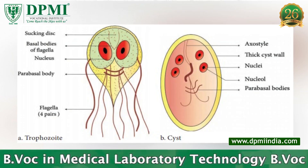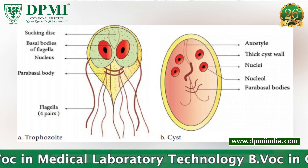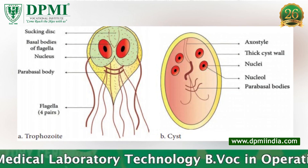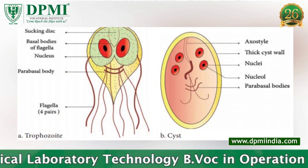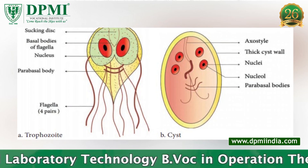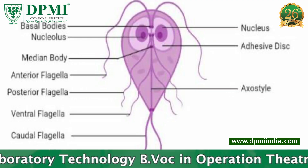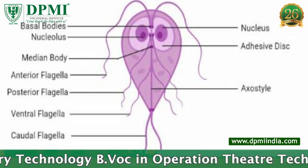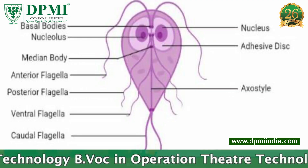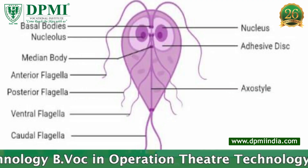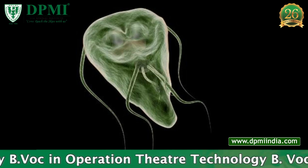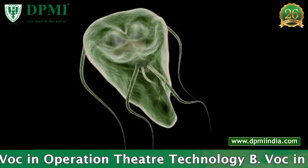It occurs in two forms: a pear-shaped trophozoite, which is the pathogenic form of the parasite, and a tetranucleate oval cyst, which is the infective form of the parasite. It has a fallen leaf-like motility.